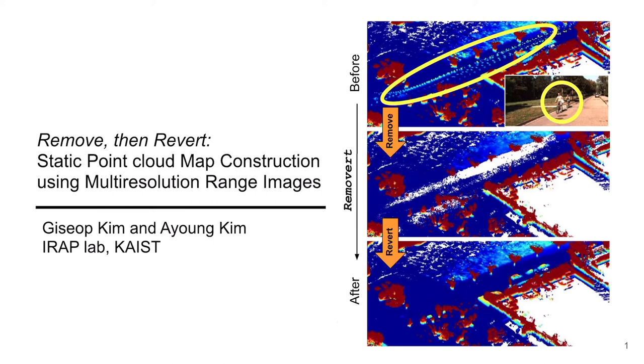Hi, my name is Kisab Kim, and I'm going to introduce our IROS work, Remove and Revert, Static Point Cloud Map Construction Using Multi-Resolution Range Images. This is a joint work with my advisor, Aion Kim.